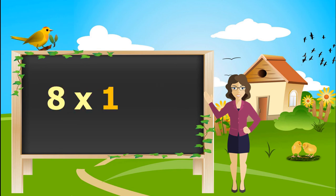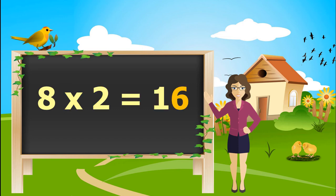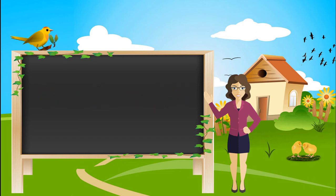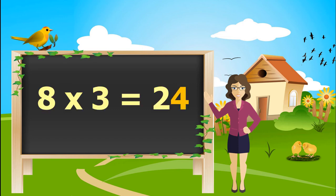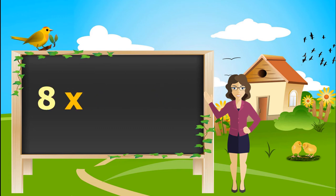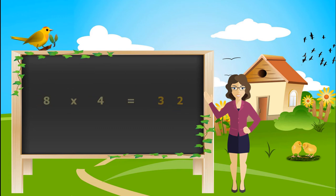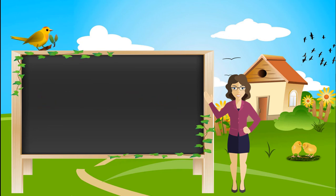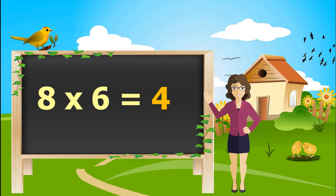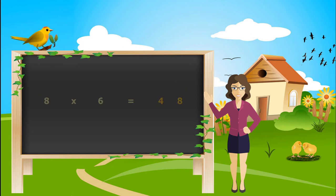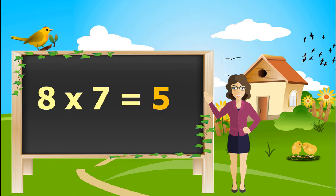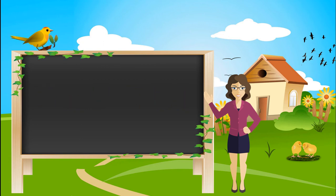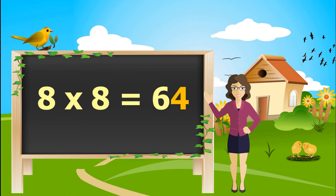8 ones is 8. 8 twos are 16. 8 threes are 24. 8 fours are 32. 8 fives are 40. 8 sixes are 48. 8 sevens are 56. 8 eights are 64.